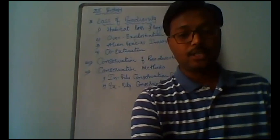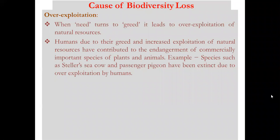The second cause is overexploitation. When need turns to greed, it leads to overexploitation of natural resources — we consume more than what we actually require. Humans, due to greed and increased exploitation, have endangered commercially important species. For example, Steller's sea cow and the passenger pigeon went extinct due to human overexploitation.